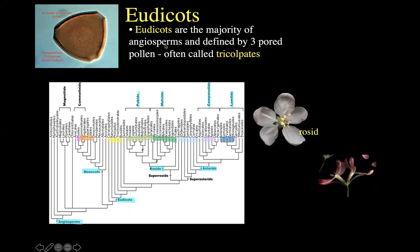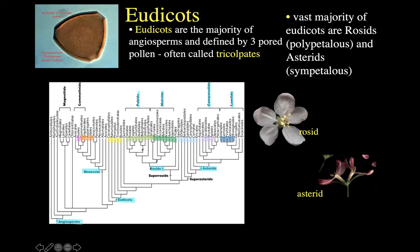Hello everybody, and welcome to our next recorded video. In the last lecture, we looked at lots of the diversity within monocots, and we will certainly be returning to monocots when we do the very important order of Poales at the end of the class — the grasses and friends. But now we turn our attention to the largest clade by far of angiosperms: the eudicots.